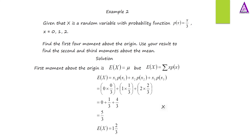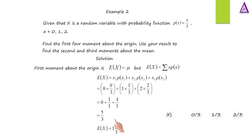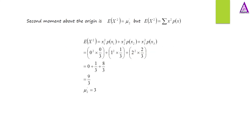Solution: The first moment about the origin equals 0 times 0/3, plus 1 times 1/3, plus 2 times 2/3. This gives 0 plus 1/3 plus 4/3. Therefore, the first moment about the origin equals 5/3.